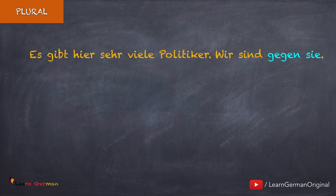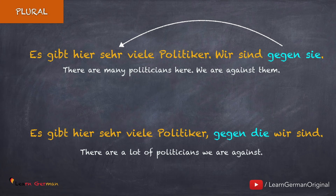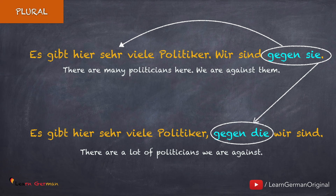Und jetzt ein Beispiel für Plural: Es gibt hier sehr viele Politiker — wir sind gegen sie. Der Relativsatz lautet: Es gibt hier sehr viele Politiker, gegen die wir sind. Der Relativsatz beginnt mit der Präposition gegen, danach kommt das Relativpronomen für Plural — die — und das Verb steht am Ende.